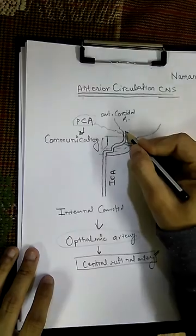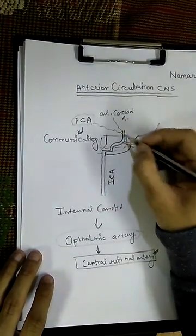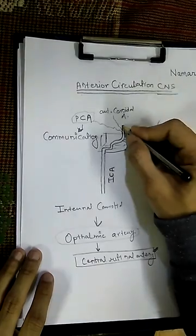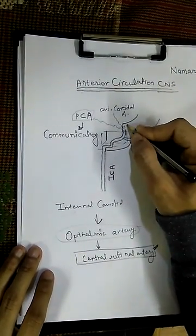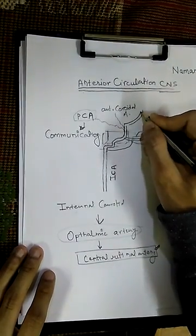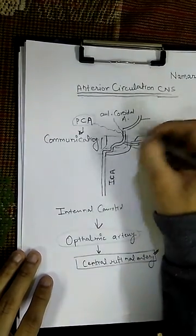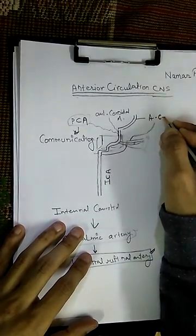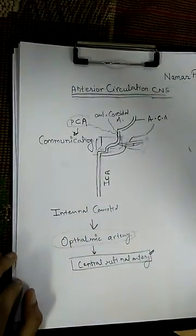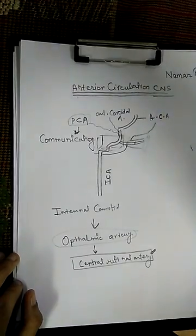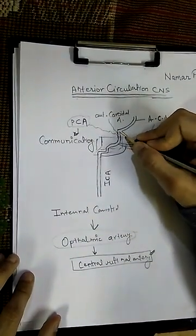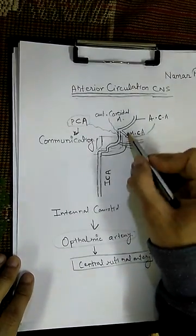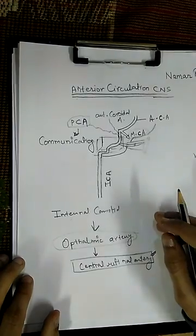Now here comes the major part of this video — the internal carotid artery will now bifurcate. It branches into the anterior cerebral artery, which is going to supply blood to the anterior part of the cerebrum, and the middle cerebral artery, which is going to supply the lateral part of the cerebrum.